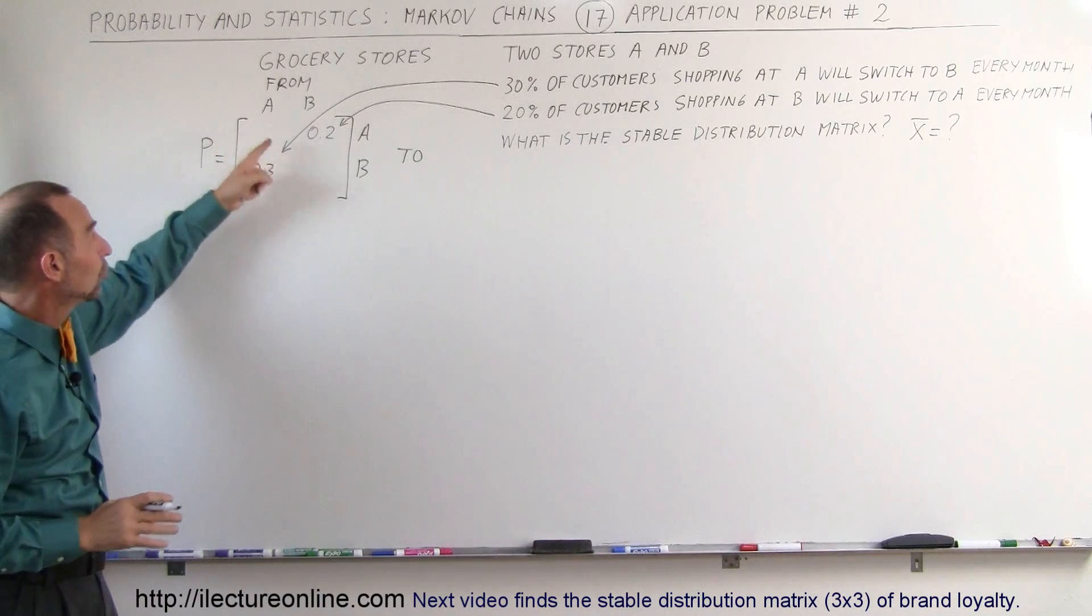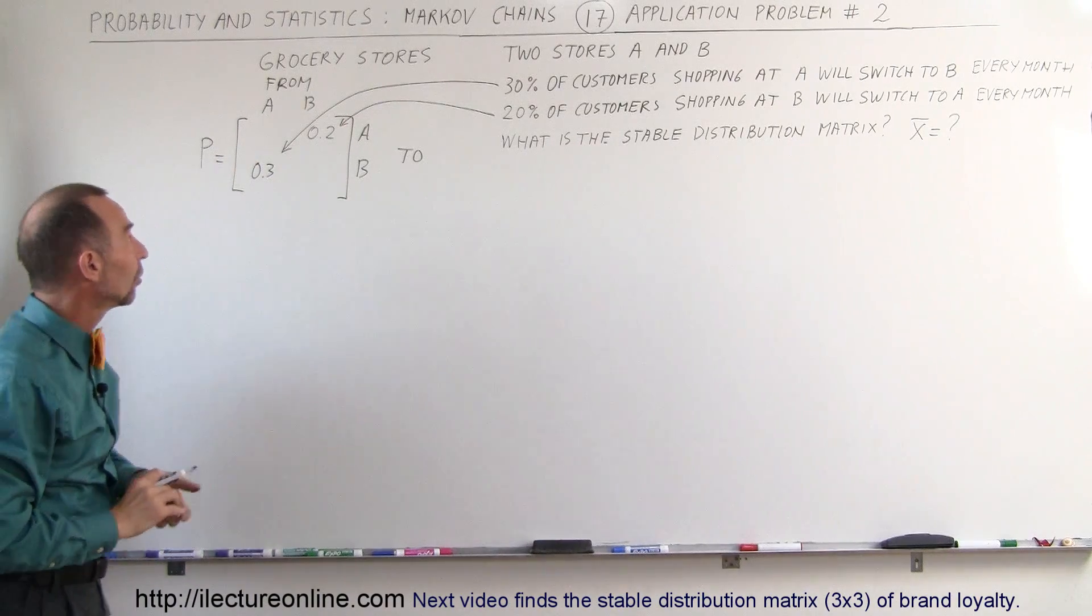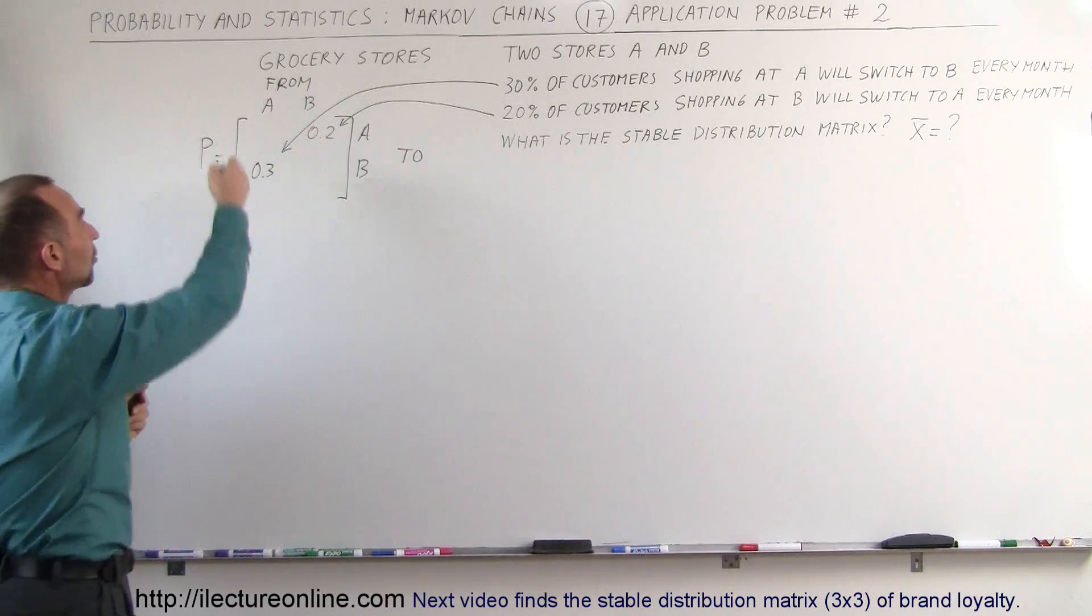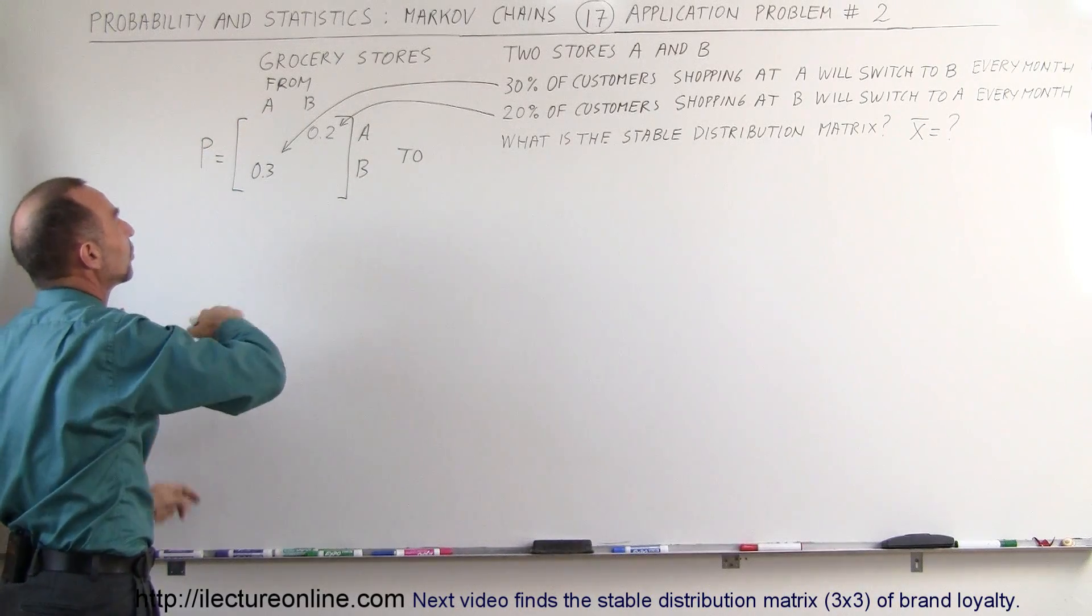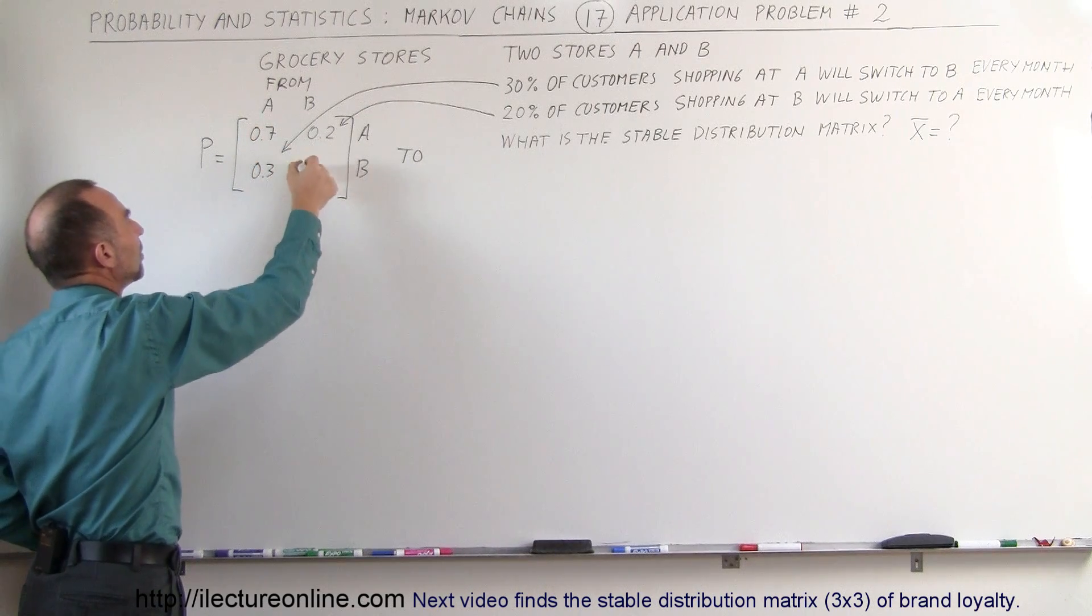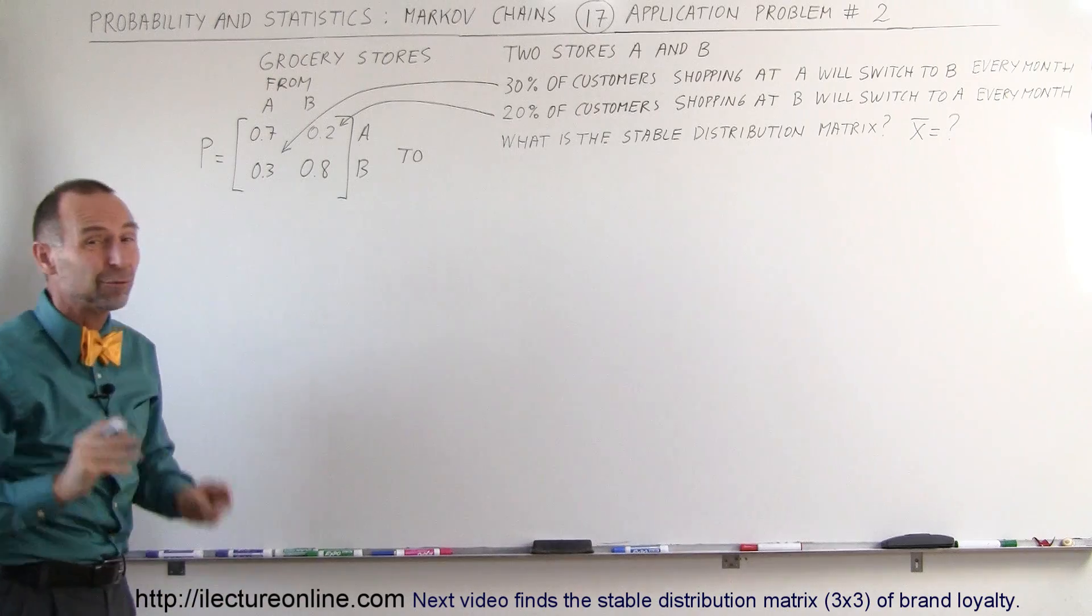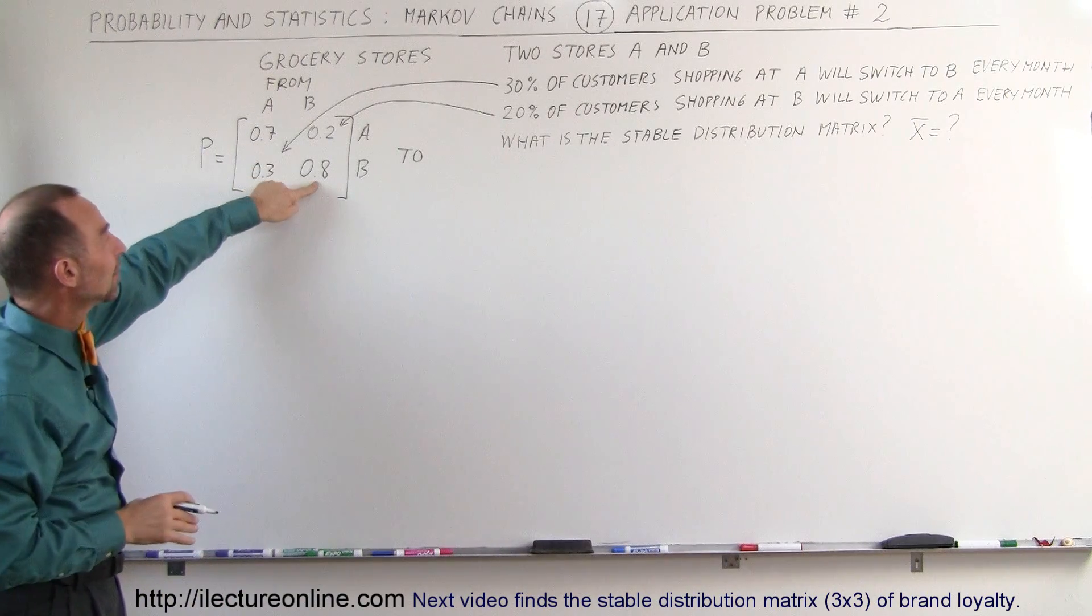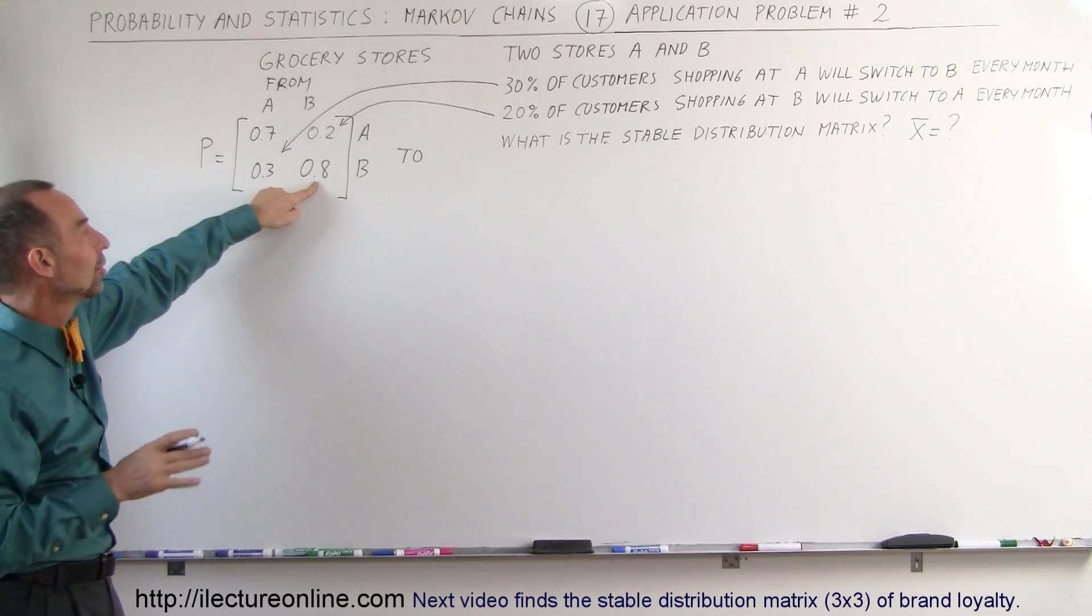Now the other two states or the other two elements here will be put in by knowing that when we sum them together vertically it should add up to 1, which means this needs to be at 0.7 and this needs to be at 0.8. What that means is of all the people shopping at A, 70% will remain at A, and for all the people shopping at B, 80% will stay at B.